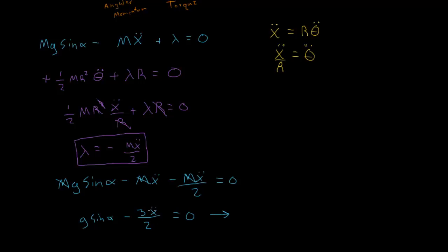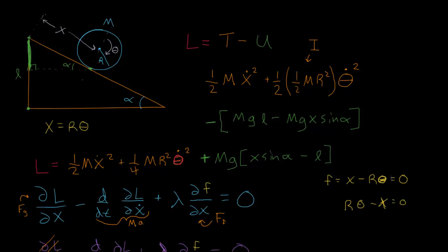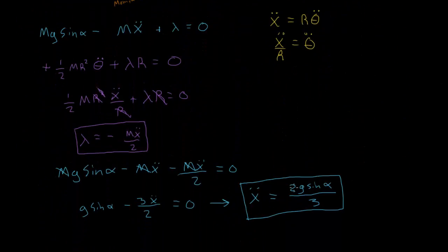Now we can solve this for x double dot, and this gets us to x double dot equals 2g sine alpha divided by three. So this is our equation of motion, or our differential equation of motion. We could integrate this to get x as a function of t. But this is our differential equation of how this disk will travel down in the x direction. And if you watched the previous videos, you would see that this is actually what we got when we did it the other way.